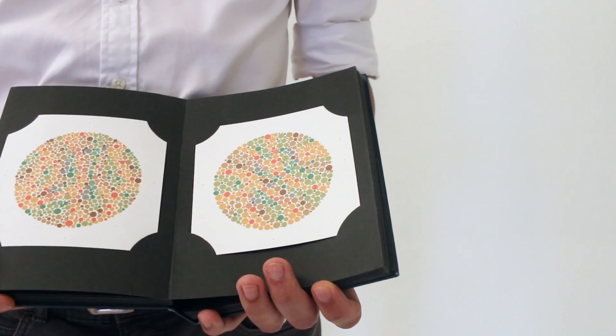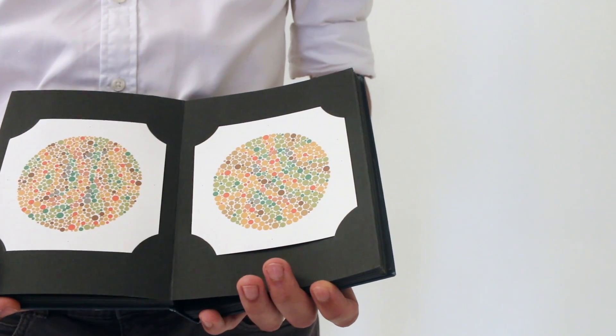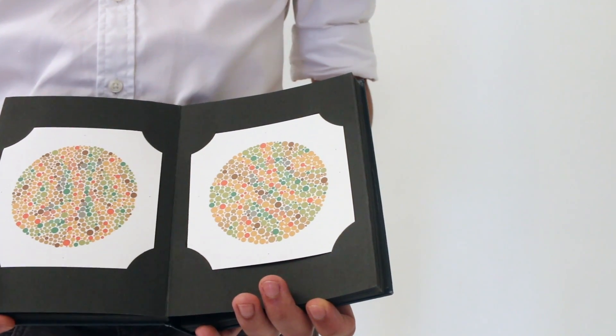You score the Ishihara out of the number of plates you've tested and the number of plates that the patient's got correct.